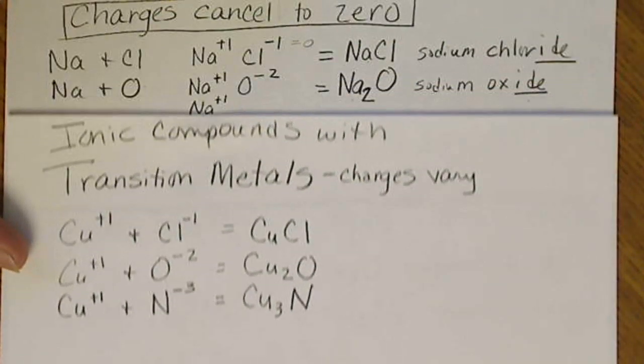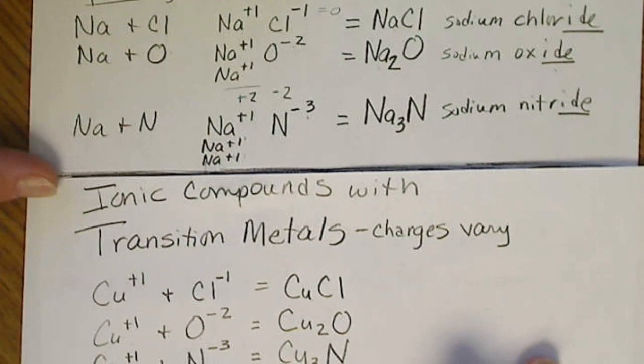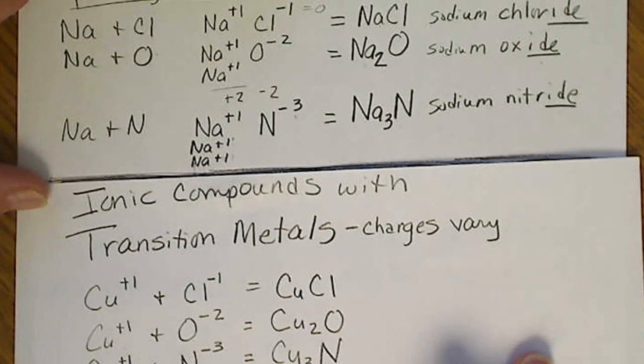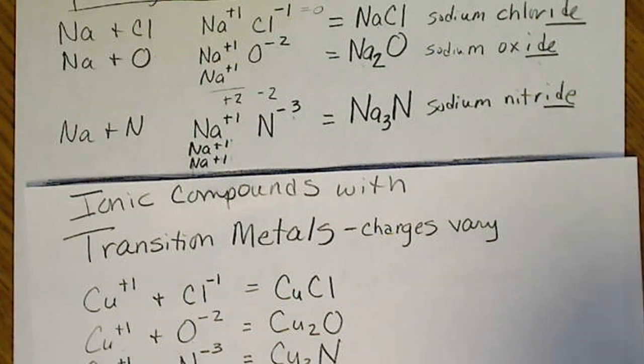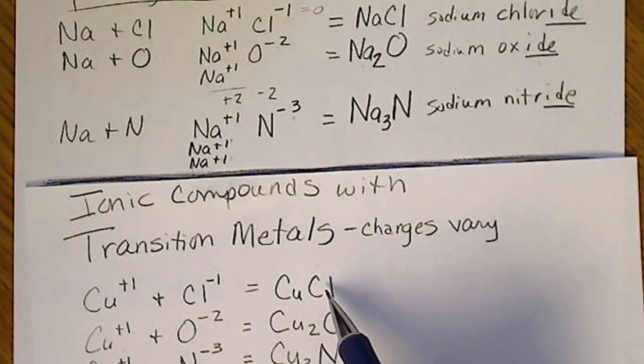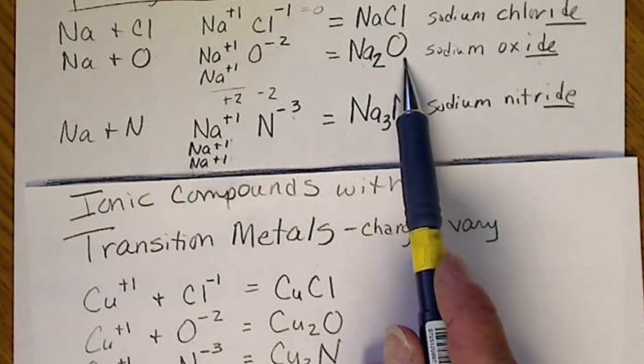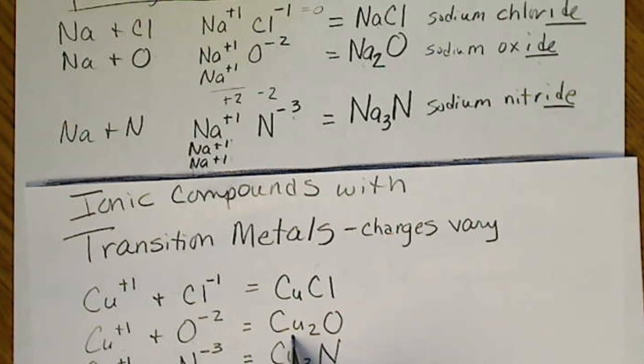That's analogous to what we did on the previous slide with sodium. Sodium is always a plus 1. So with chloride, it's going to be a 1 to 1 ratio, just like copper with chloride. When sodium gets together with oxygen, there's 2 sodiums for every 1 oxygen. That's the same formula here, because copper is a plus 1.